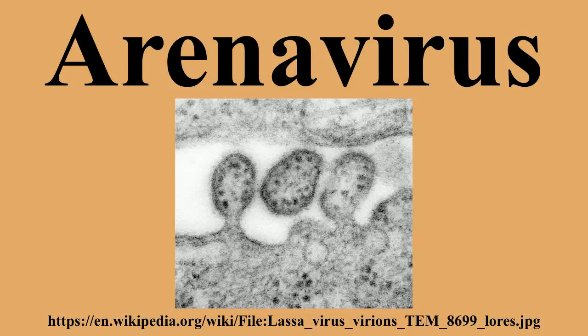Viewed in cross-section, arenaviruses contain grainy particles that are ribosomes acquired from the host cells. It is from this characteristic that they acquired the name 'arena,' from the Latin root meaning sand. The ribosomal structures are not believed to be essential for virus replication. Virus particles, or virions, are pleomorphic but are often spherical, with a diameter of 60 to 300 nanometers, and are covered with surface glycoprotein spikes.